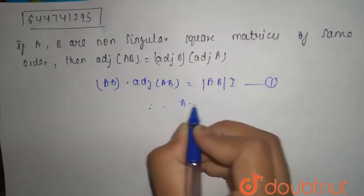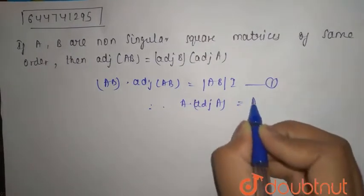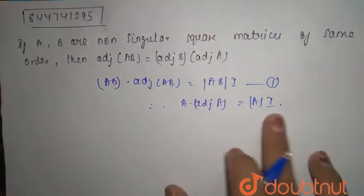As you know, A into adjoint of A is nothing but mod of A into I, where I is the identity matrix.